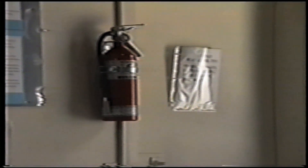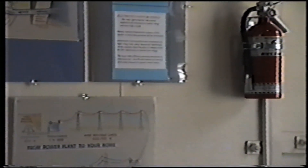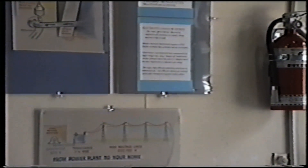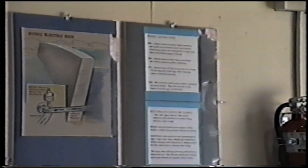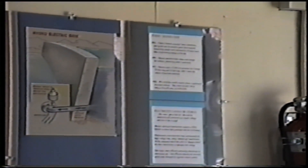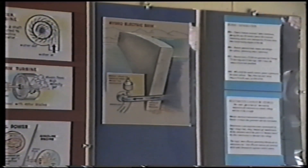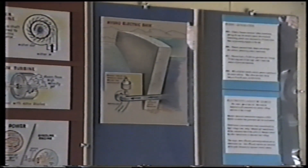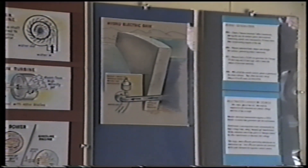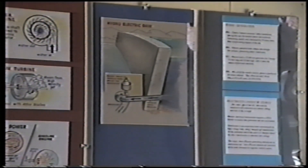Electricity cannot be stored except in another form, such as chemical energy in a battery or water behind a dam. Electricity travels near the speed of light, which is 186,000 miles per second, so the electricity produced by a water turbine is used before the water has left the turbine blade.